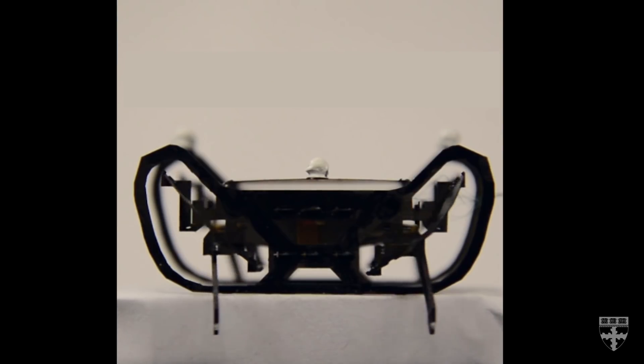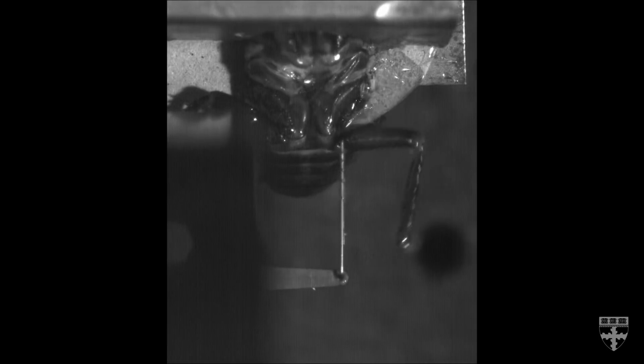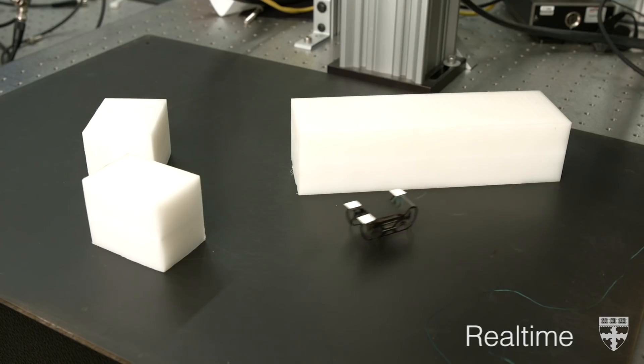Each leg is equipped with two actuators, mimicking the joints of real insects. These actuators give Hammer a lot of maneuverability.